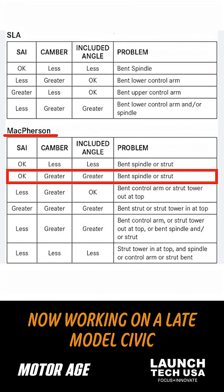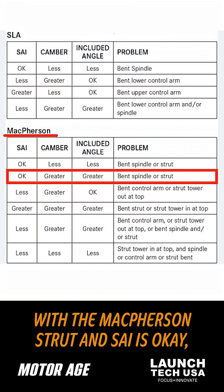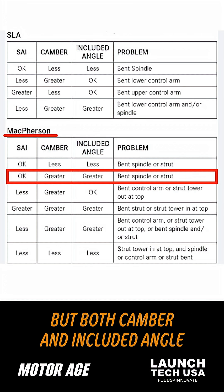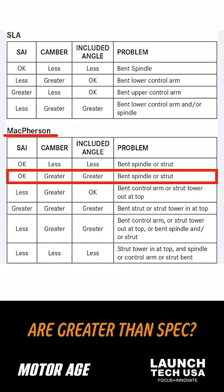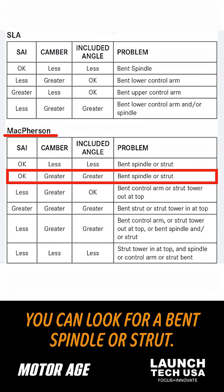Working on a late model Civic with a McPherson strut and SAI is okay, but both camber and included angle are greater than spec? You can look for a bent spindle or strut.